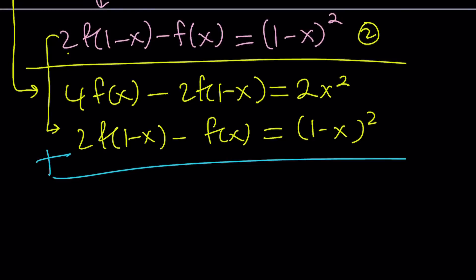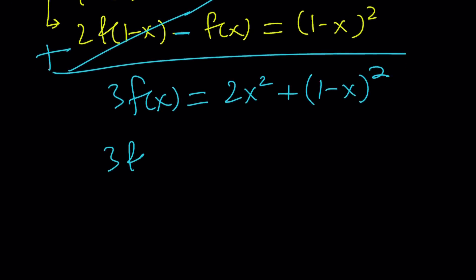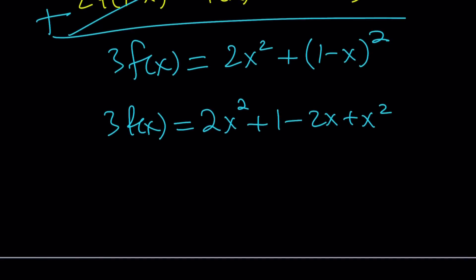Now 2 times f(1-x) is going to cancel out. We're going to have 4f(x) minus 1f(x), that gives us 3f(x) equals 2x² plus (1-x)². Now we can expand the perfect square. It's going to be 1-2x+x², which is the same as (x-1)², by the way.